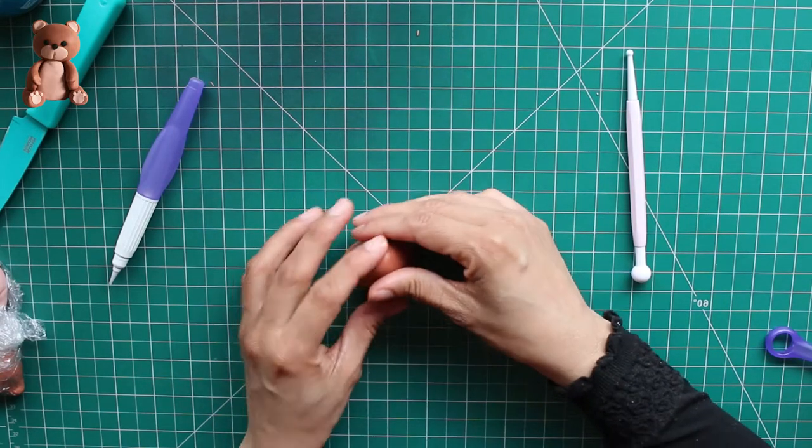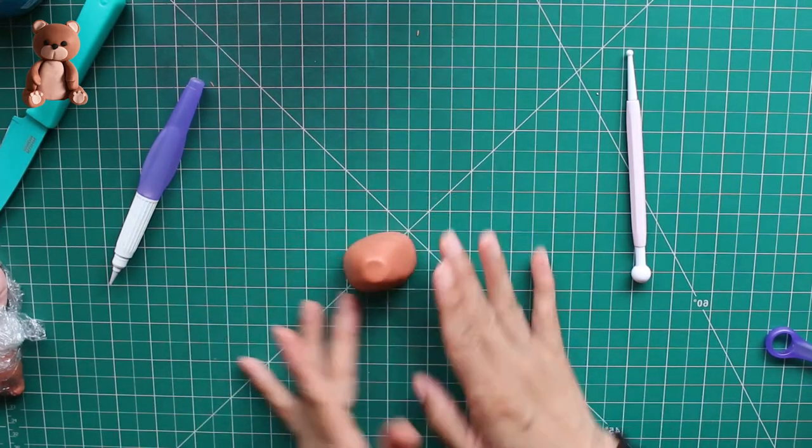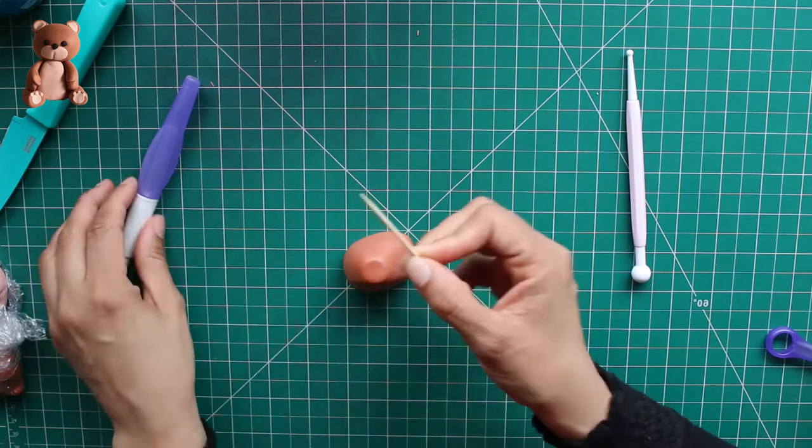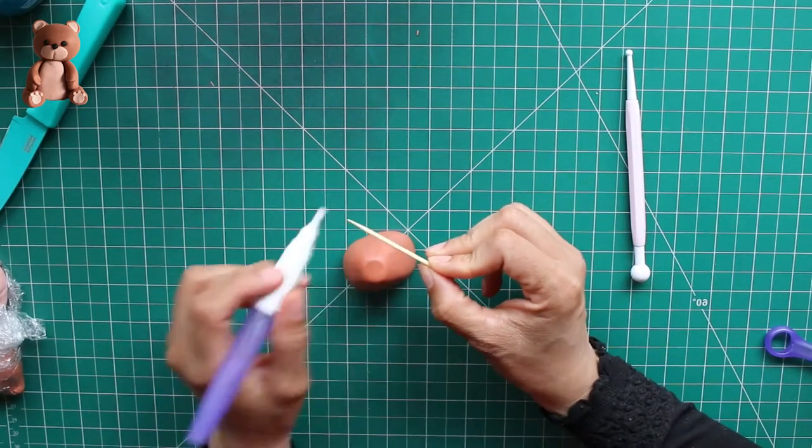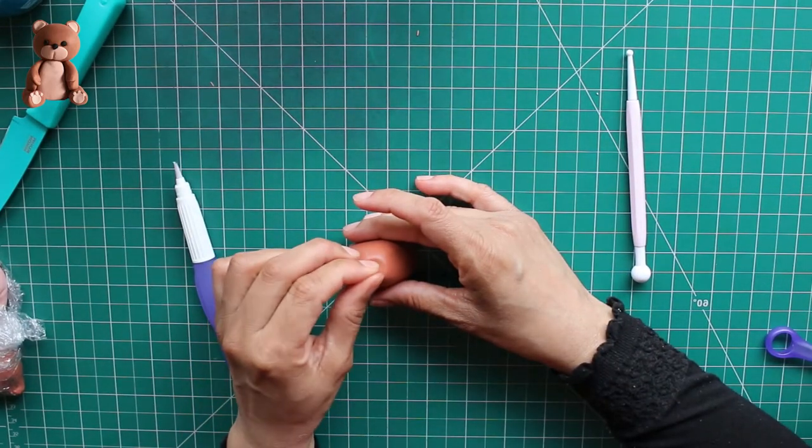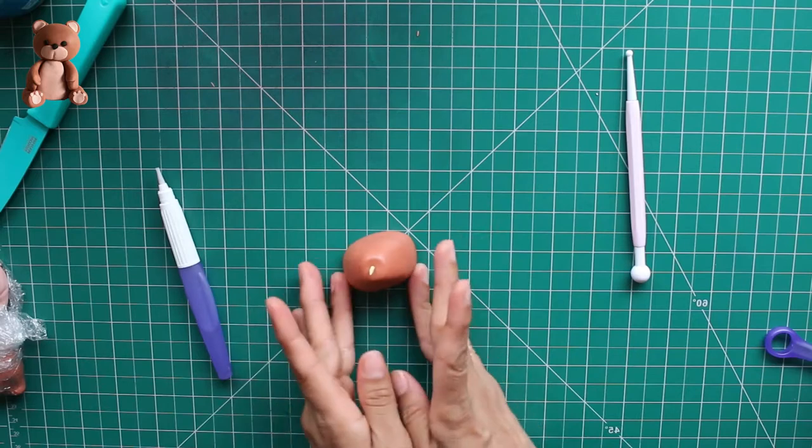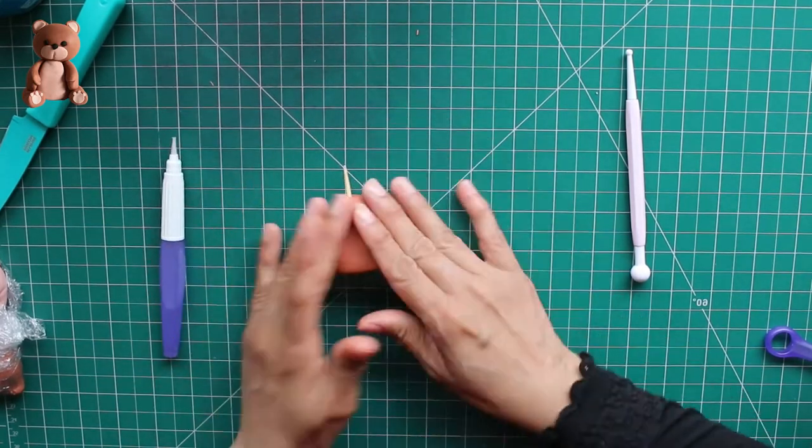Just smooth out any lines or imprints on it. And once you're happy with the shape of the body, just take a toothpick, put some water on it and insert it in the middle, in the center of the body. So this is to give stability and strength to the body and it will help the body hold the weight of the head.